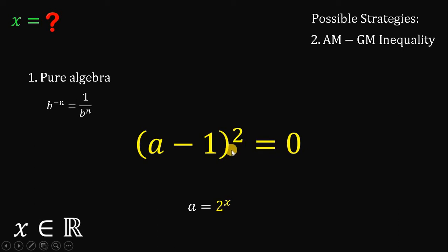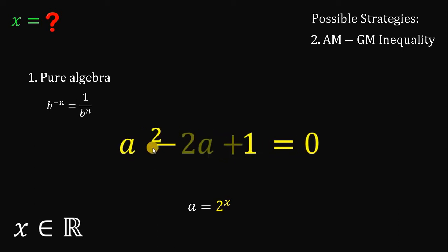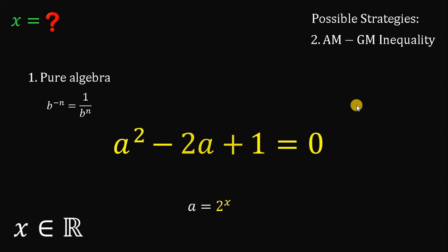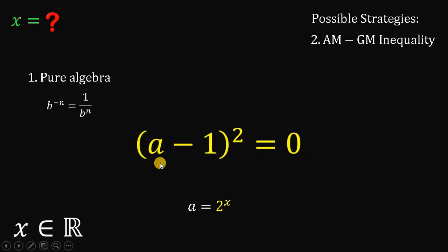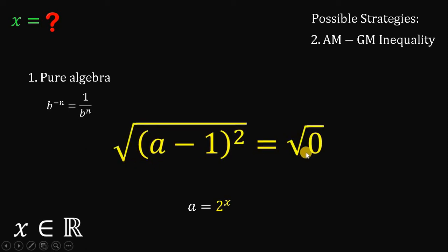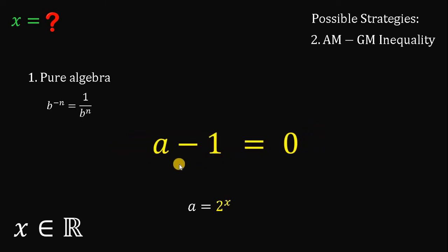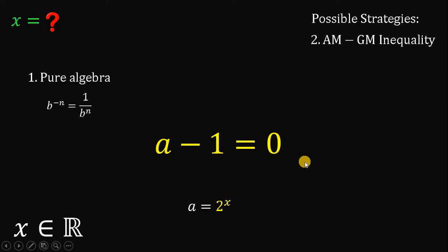Take note that a squared minus 2a plus 1 is factorable and can be written as the quantity (a minus 1) squared. If we expand this, of course we get a squared minus 2a plus 1. Now let's solve for the value of a by taking the square root on both sides. The square root of 0 is just 0, and the square root of (a minus 1) squared is just a minus 1. Adding 1 on both sides, we get that the value of a must be equal to 1.